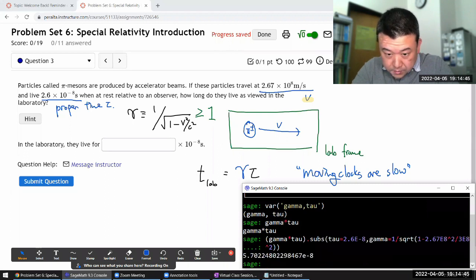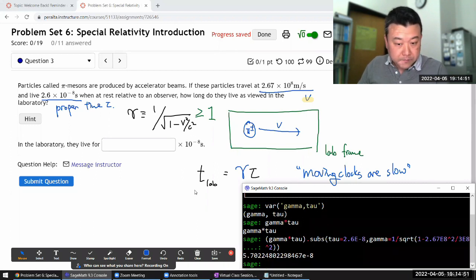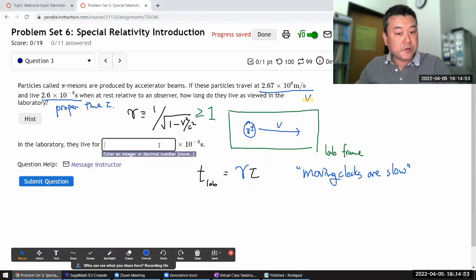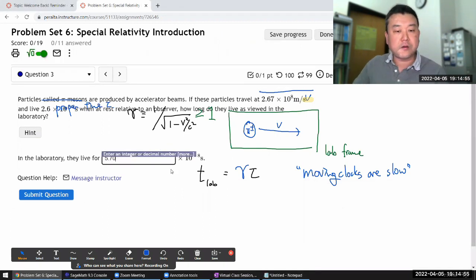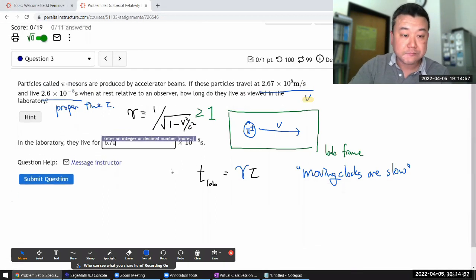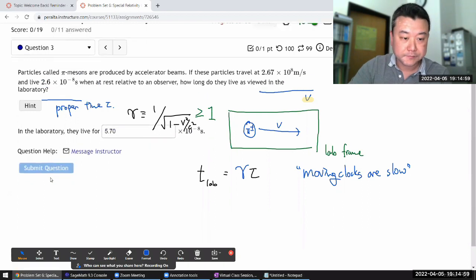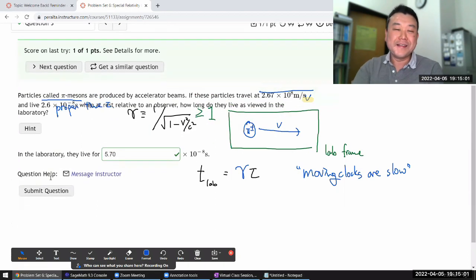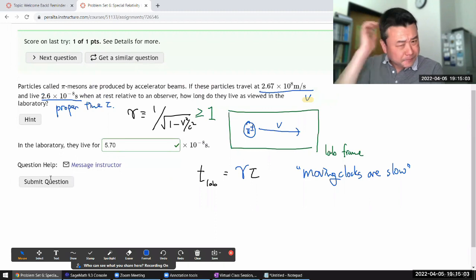So yeah, that should be it. Yeah, 5.70 times 10 to the power of minus 8. Okay, yeah, so 5.70 times 10 to the power of minus 8 seconds. So that's it, pretty simple. I haven't done it before.